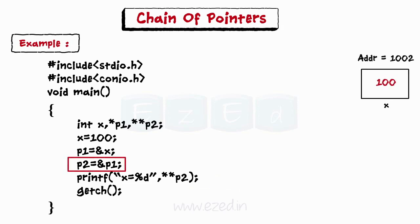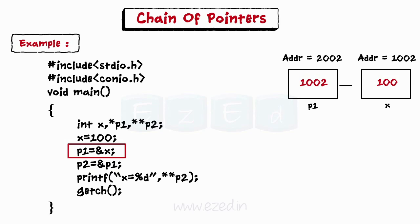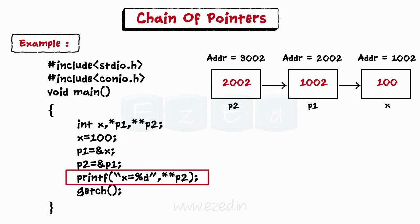Here, x is an integer variable and p1 is an integer pointer, which is pointing to x. p2 is another integer pointer, which is pointing to p1. The variable value pointed by p1 can be accessed using the indirection operator twice on p2. Here, the printf statement gives us the value pointed by p2, which is 100.